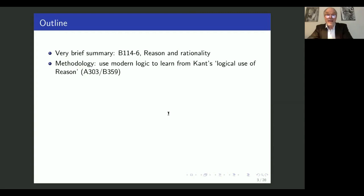My methodology is to use modern logic to learn from Kant's logical use of reason. I do believe that Kant was not quite sincere when he said that logic had not made any progress since Aristotle. I think he intended to introduce some logical innovations himself, and that that was precisely the point of B114 to 116. And we need some hefty logic to see what is in there.